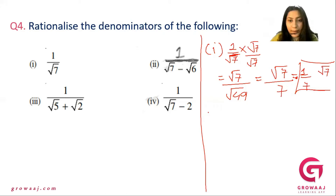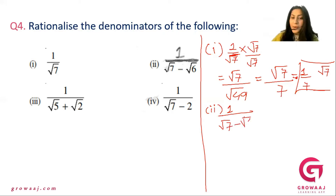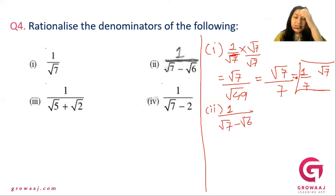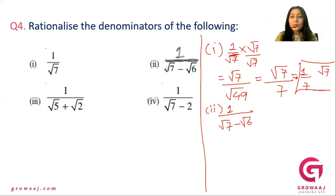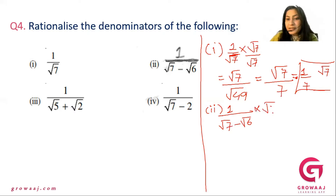Next is 1 by square root of 7 minus square root of 6. Now we have a denominator with two terms that are subtracted. To rationalize, we multiply and divide by the conjugate, which is square root of 7 plus square root of 6.